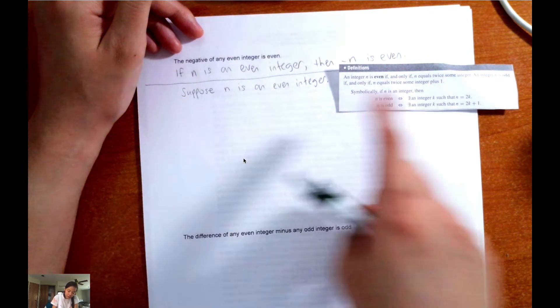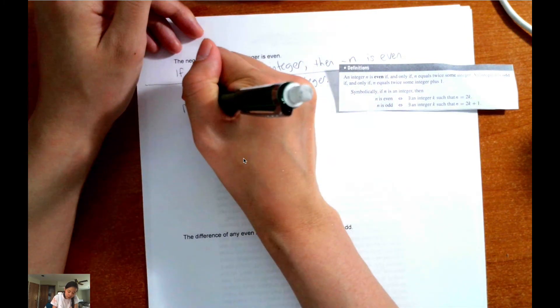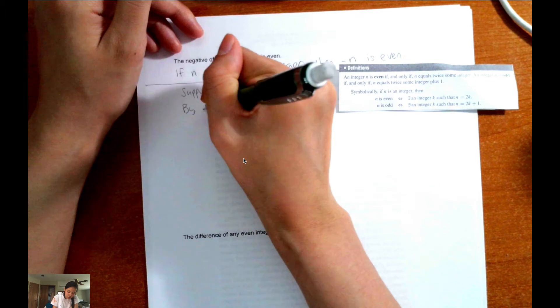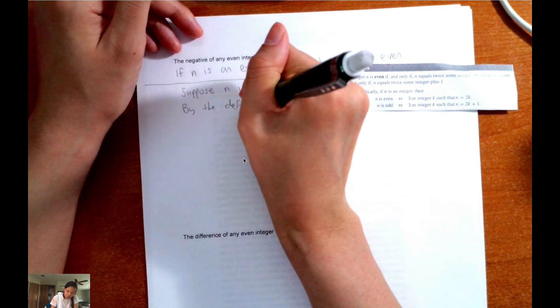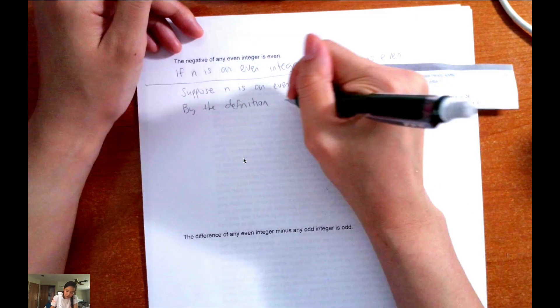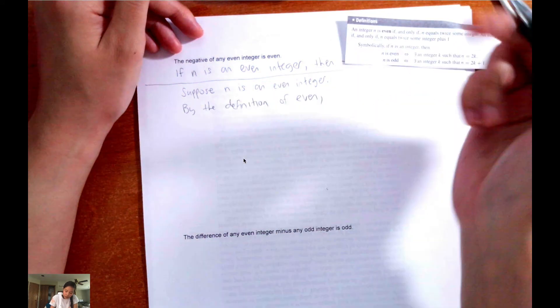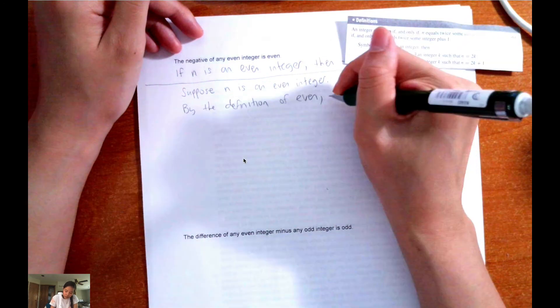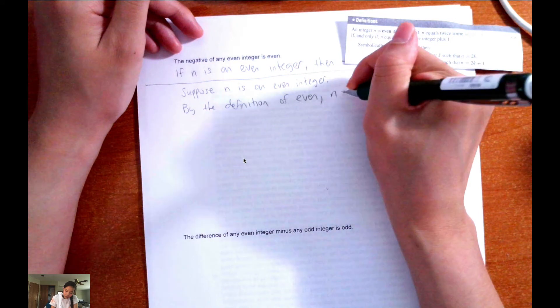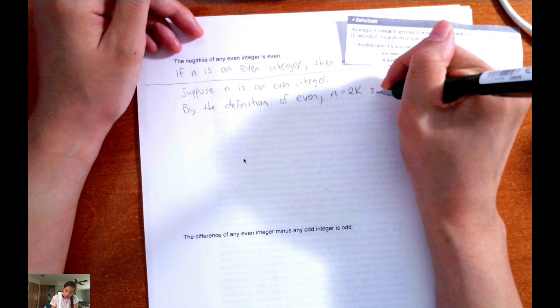So we could say, by the definition of even n equals 2k such that k is an integer.